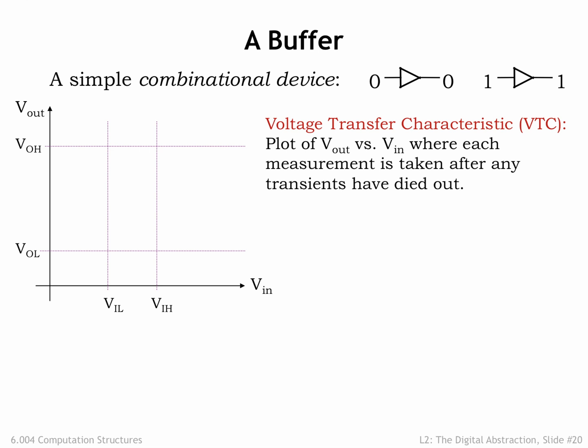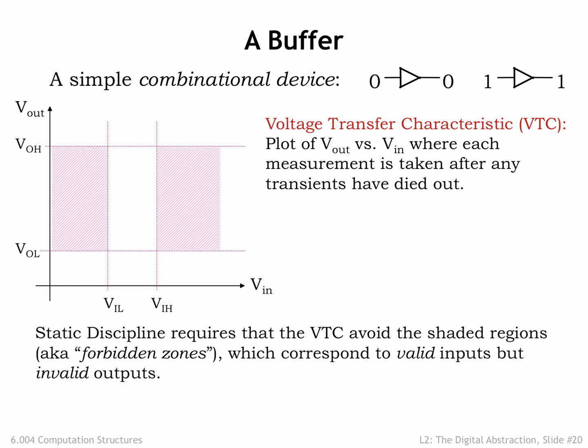Before we start plotting points, note that the static discipline constrains what the voltage transfer characteristic must look like for any combinational device. If we wait for the propagation delay of the device, the measured output voltage must be a valid digital value if the input voltage is a valid digital value — valid in, valid out. We can show this graphically as shaded forbidden regions on our graph. Points in these regions correspond to valid digital input voltages but invalid digital output voltages. So if we're measuring a legal combinational device, none of the points in its voltage transfer characteristic will fall within these regions.